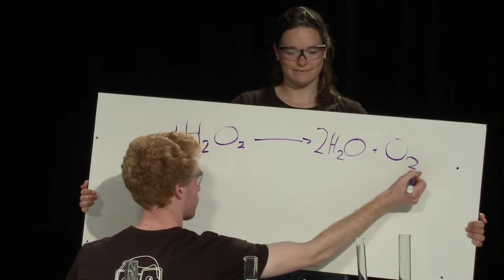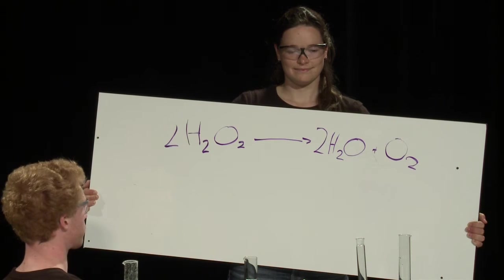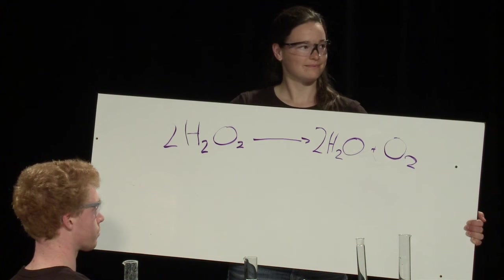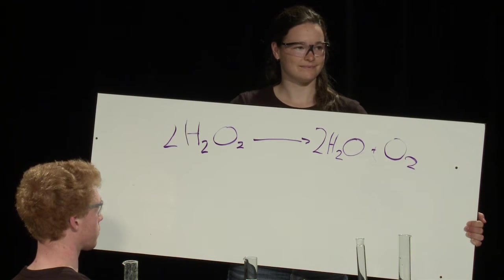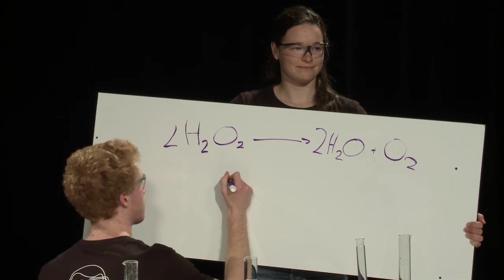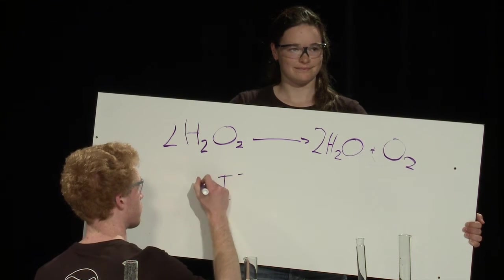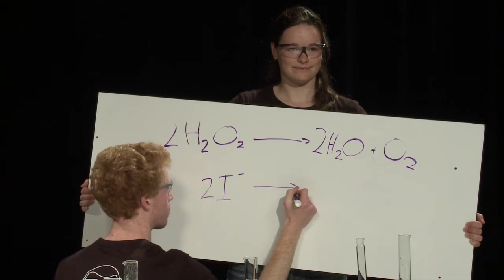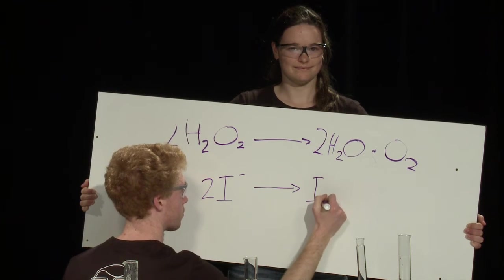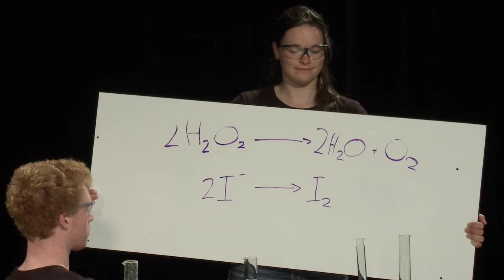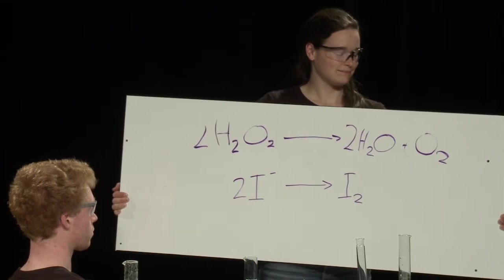The intense heat given off by the reaction causes some of the water to boil. That's why you see steam coming out of the top. Now the brown color is due to some of the potassium iodide being oxidized into iodine. Iodine you may have seen around the house. It's sometimes used as disinfectant and as an orangey brown liquid.